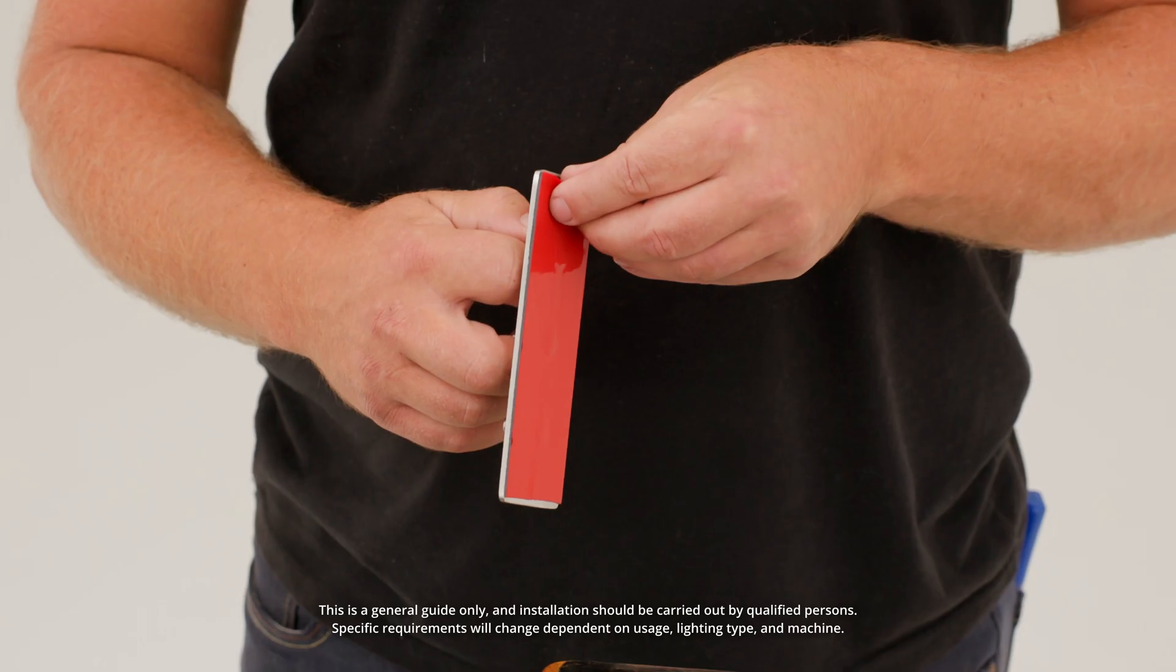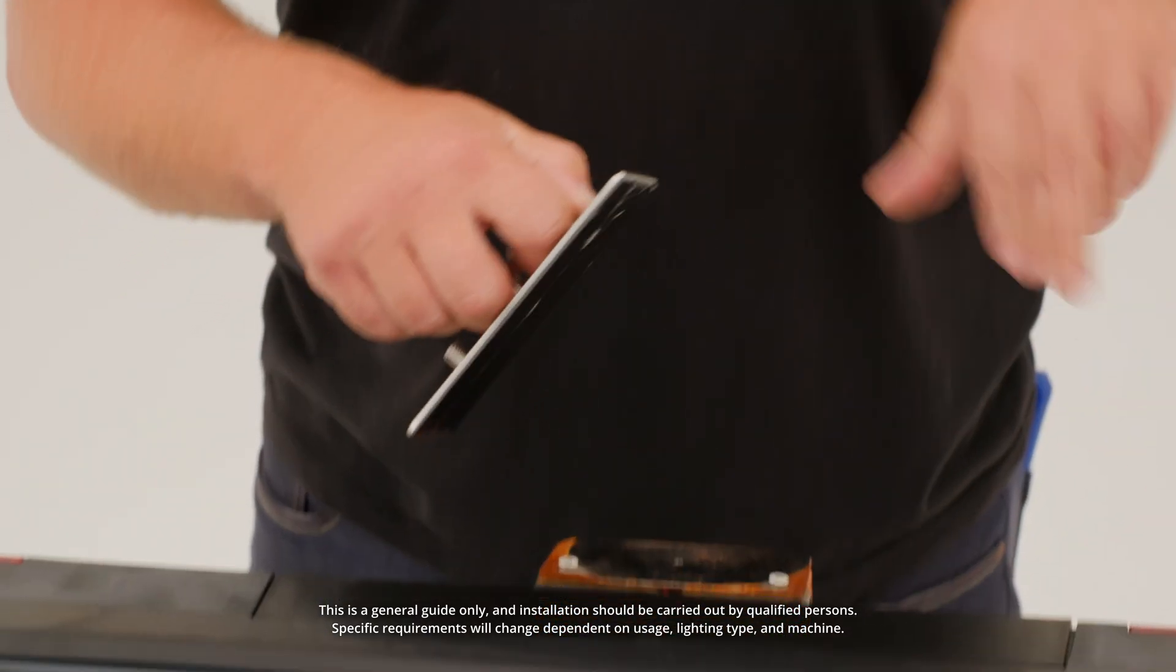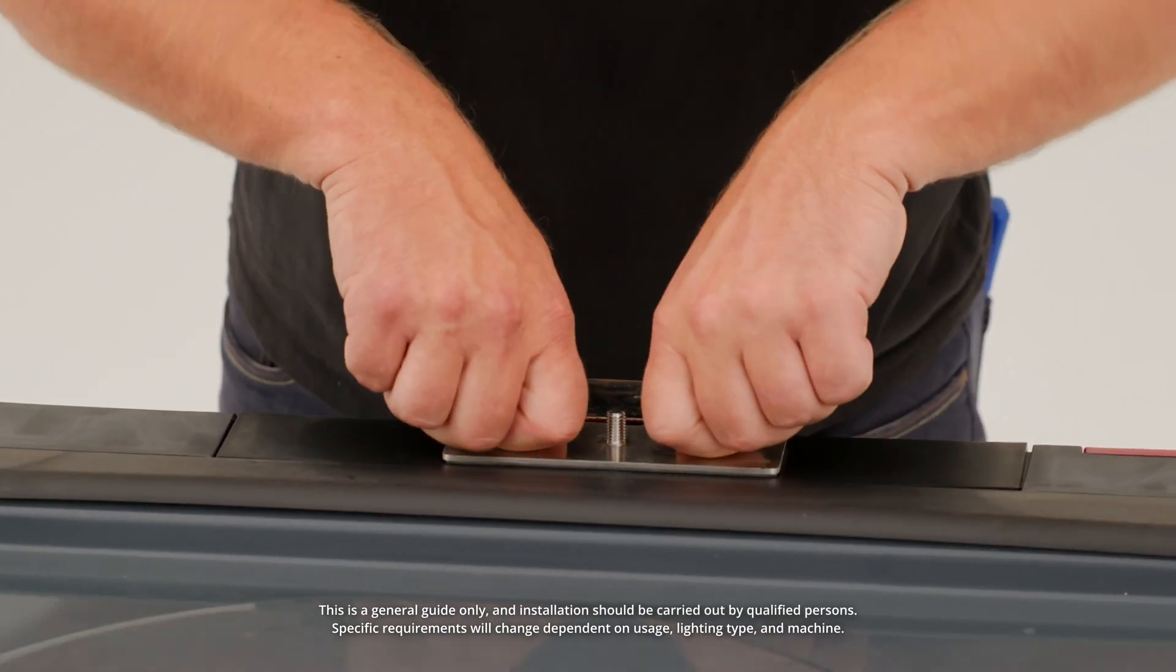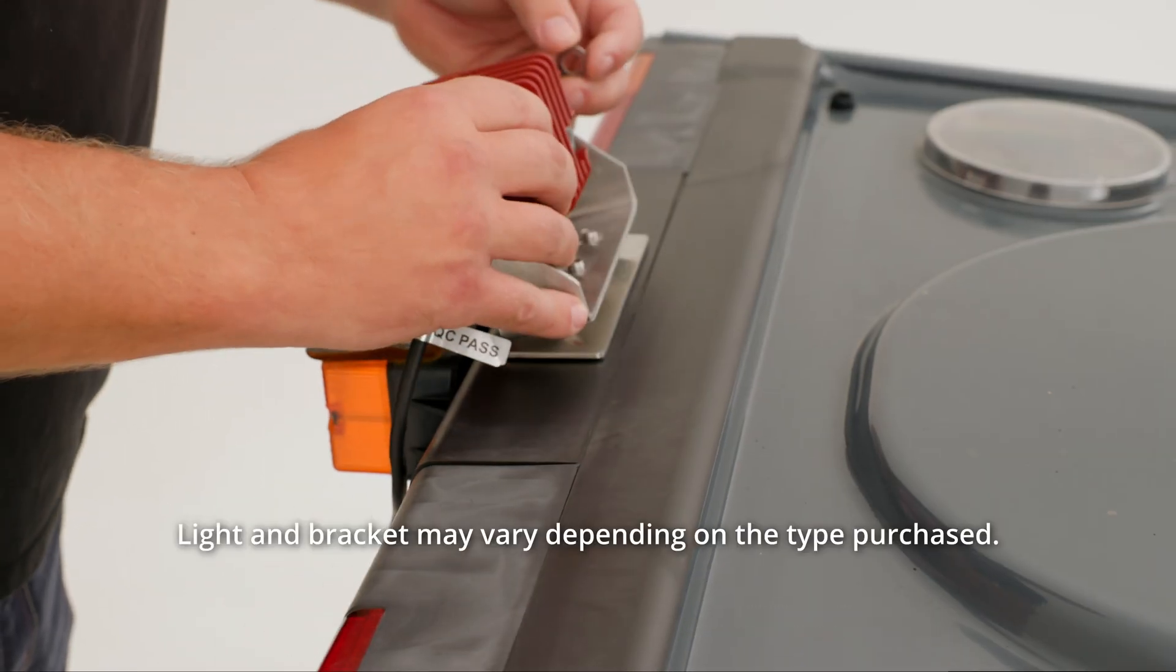Remove the adhesive backing from the mounting bracket and attach it to the desired location. Press down firmly to ensure you adequately activate the 3M adhesive and check that all edges are fully adhered to the surface.